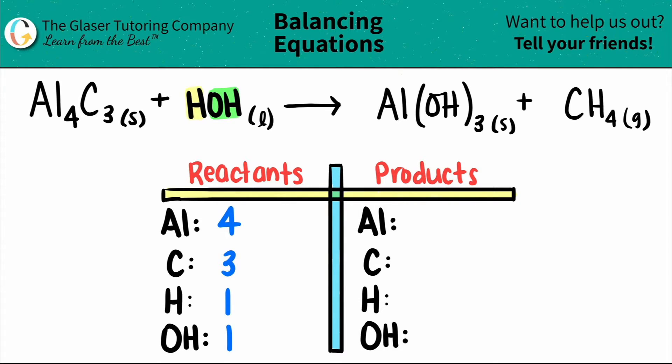Coming over to my product side, I have aluminum, but I have only one of them. There's no subscript, so I have one. The OH, which is the polyatomic, there's three total OHs. So where my OH is I'm going to put a three there. I have one carbon, so I put a one, and then I have four hydrogen, so I put a four here.